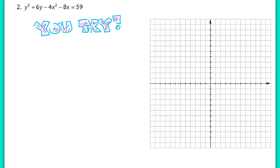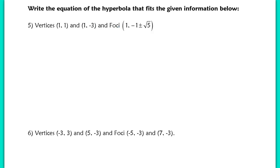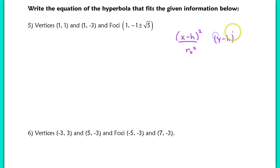Try the next example as well — complete the square, determine what type of conic you have, graph it, and check with the key. In the last portion of the lesson, we'll go through several examples where we write the equation of a hyperbola that fits given information. To the side, I'll write the general form for a hyperbola. We can't put signs in front of each term yet because we don't know which way the hyperbola is supposed to open.